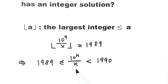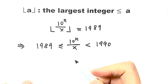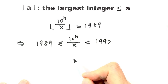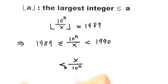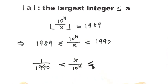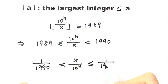Because we want to solve for x, we're going to take the reciprocal of each part of the double inequality. Doing so, we need to reverse the inequality signs. Then we get x over 10 to the power n in the middle, and that is bigger than 1 over 1989 on the right side.